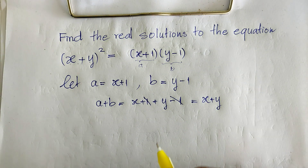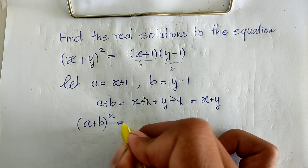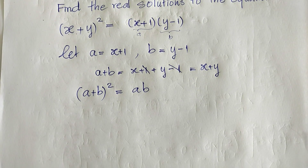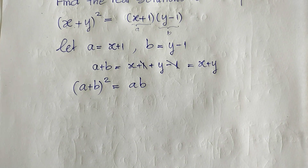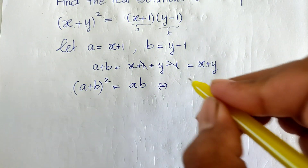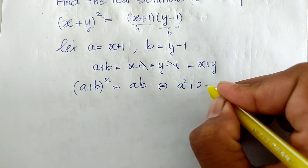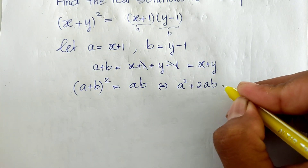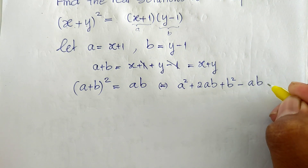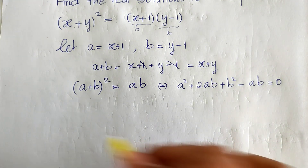So we get the equation: (a + b) squared equals a times b. Now expanding: a squared plus 2ab plus b squared minus ab equals zero.